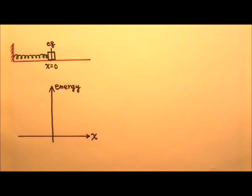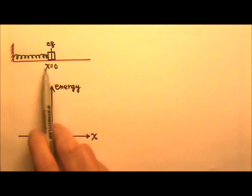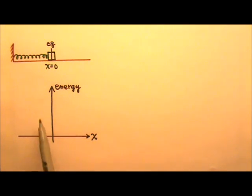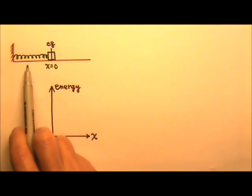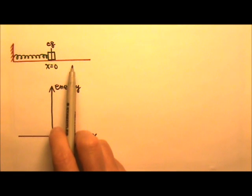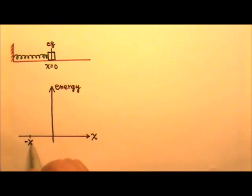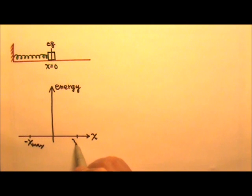In this video, we will plot some energy graphs for a horizontal spring-mass oscillator. Let's first plot an energy versus x graph. Because the box is only going to oscillate between negative x-max and positive x-max, the range of x for our graph will only go from negative x-max to positive x-max.